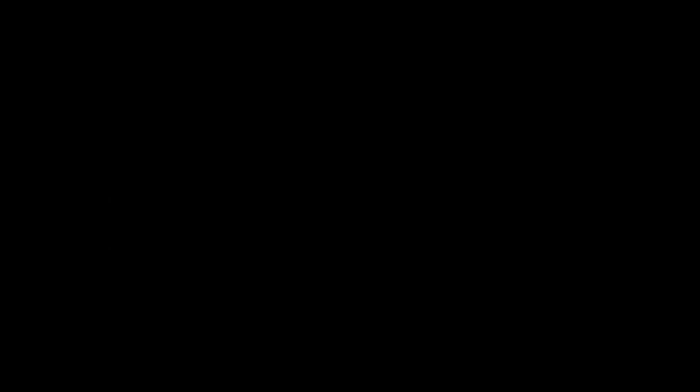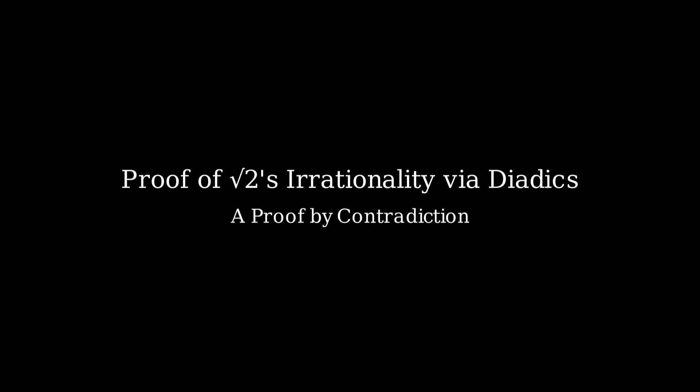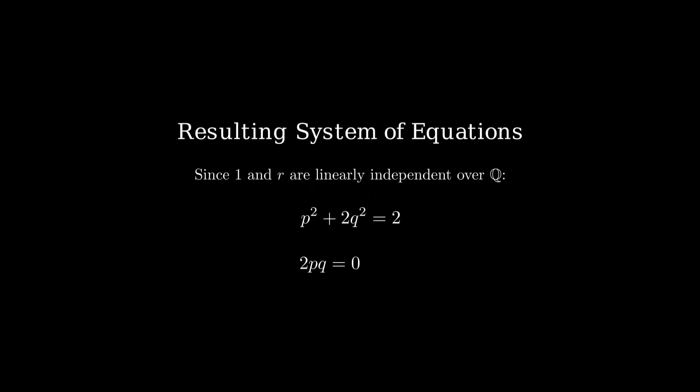Let's now prove that the square root of 2 cannot be represented as a dyadic number. We begin by assuming the opposite. Suppose square root of 2 can be written as a rational dyadic number in the form p plus q times r, where both p and q are rational numbers. Squaring both sides, we get 2 equals p squared plus 2pqr plus q squared r squared. Since r squared equals 1, we simplify this to 2 equals p squared plus q squared plus 2pqr. For this to be true, and since 1 and r are linearly independent over the rationals, the coefficients must separately match. That gives us a system of two equations: p squared plus q squared equals 2, and 2pq equals 0. The second equation tells us either p or q must be 0.